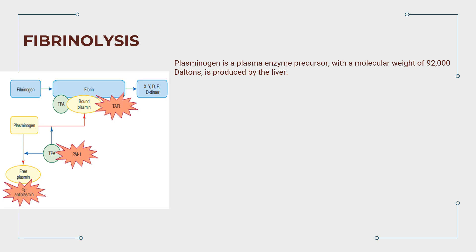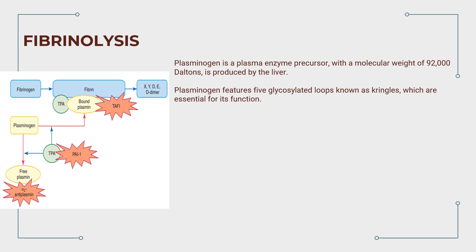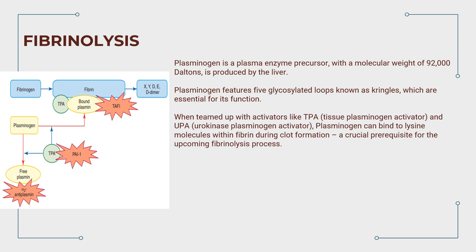Plasminogen is a plasma enzyme precursor with a molecular weight of 92,000 Daltons, produced by the liver. It features five glycosylated loops known as kringles, which are essential for its function. When teamed up with activators like TPA, tissue plasminogen activator, and UPA, urokinase plasminogen activator, plasminogen can bind to lysine molecules within fibrin during clot formation — a crucial prerequisite for the fibrinolysis process.